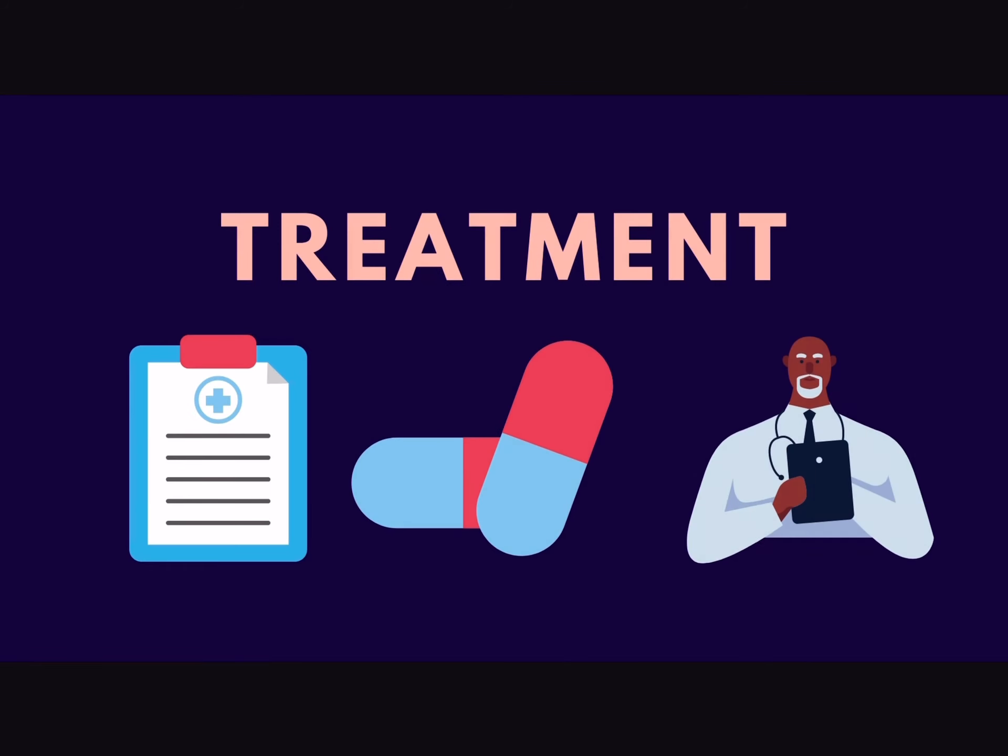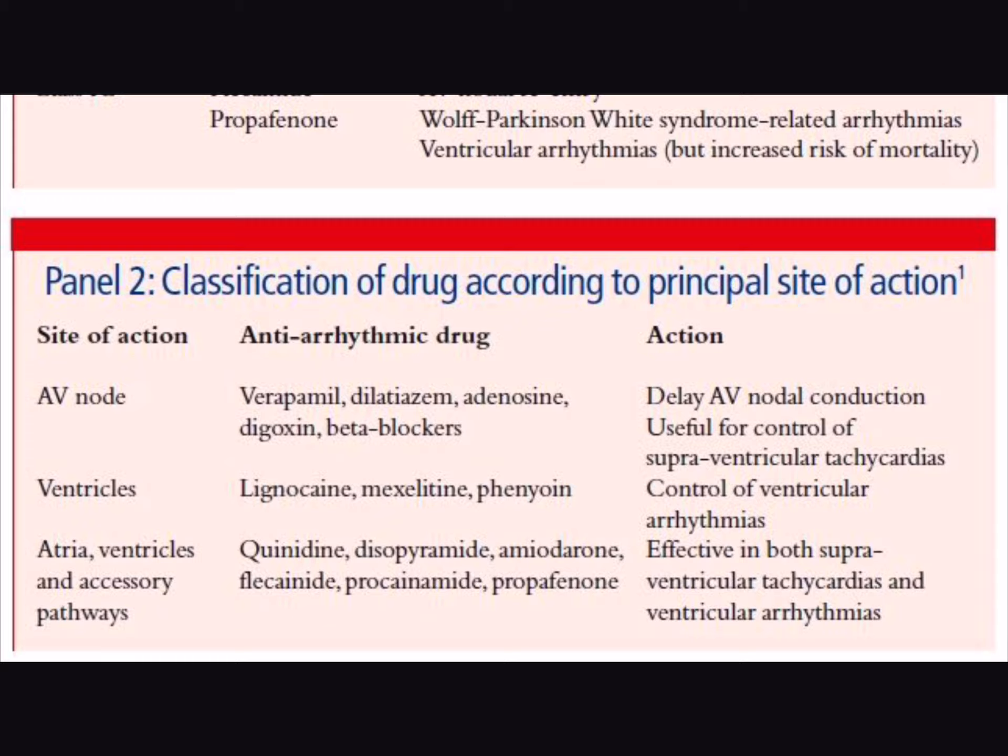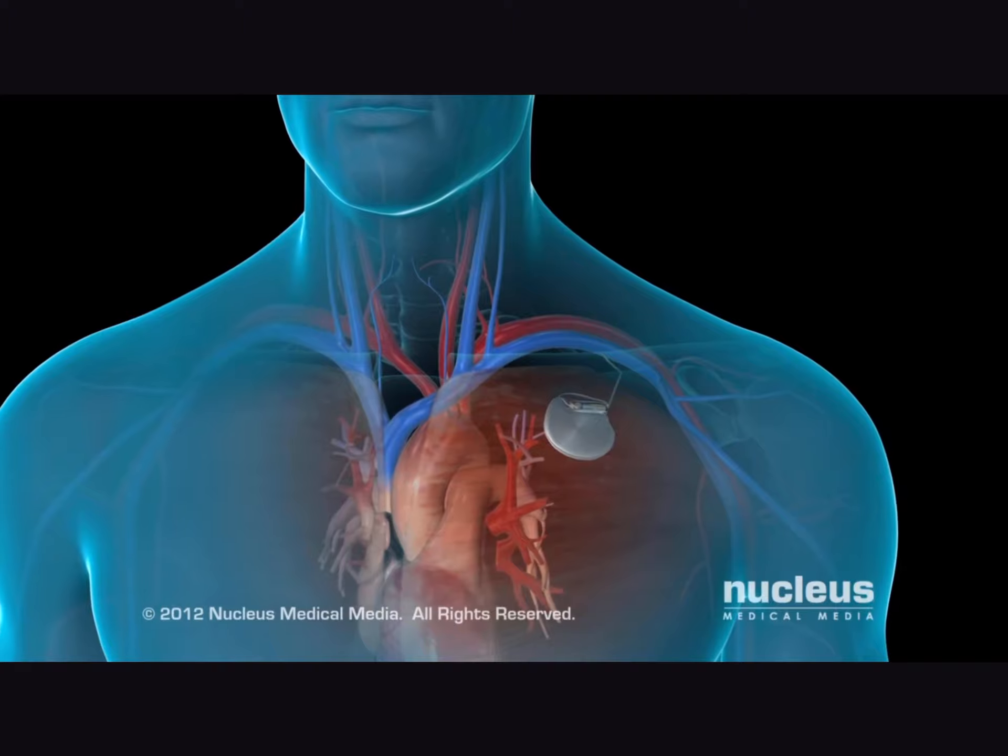While arrhythmia can be a struggle to deal with, it is treatable. Some common treatments for atrial fibrillation, for example, include medications, therapy to reset the heart rhythm called cardioversion, and surgery or catheter procedures.